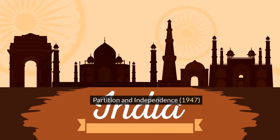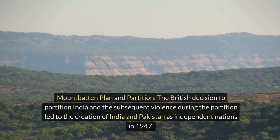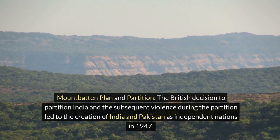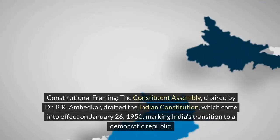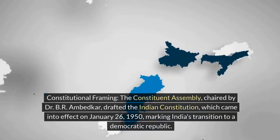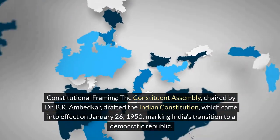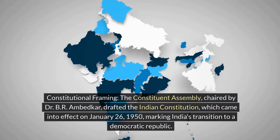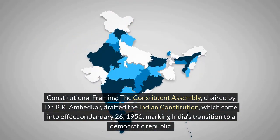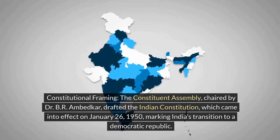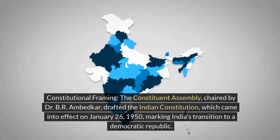Phase 5: Partition and Independence (1947). The British decision to partition India and the subsequent violence during the partition led to the creation of India and Pakistan as independent nations in 1947. The Constituent Assembly, chaired by Dr. B.R. Ambedkar, drafted the Indian Constitution, which came into effect on January 26, 1950, marking India's transition to a democratic republic.